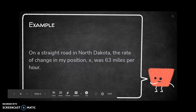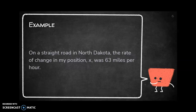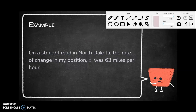On a straight road in North Dakota, the rate of change in my position x was 63 miles per hour. According to the units, we are using change in position over change in time because we've got miles per hour. So the differential equation is simply dx/dt = 63.